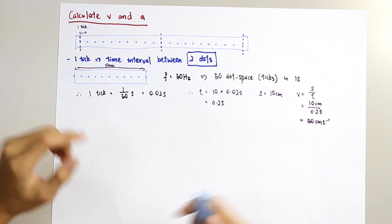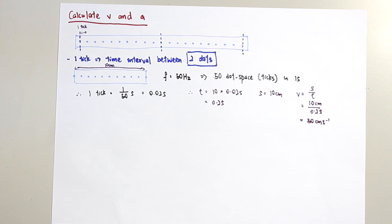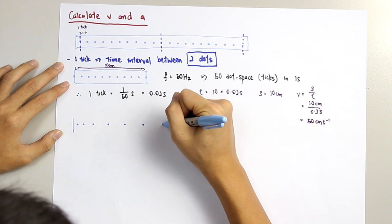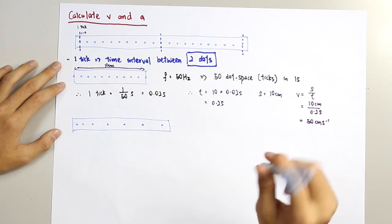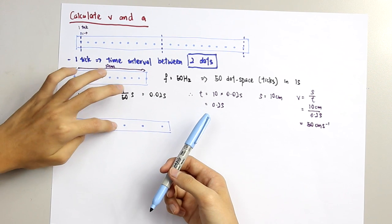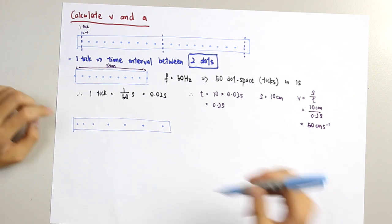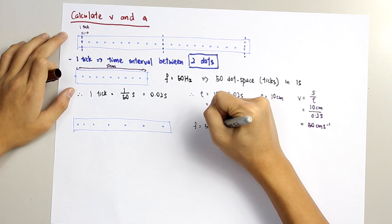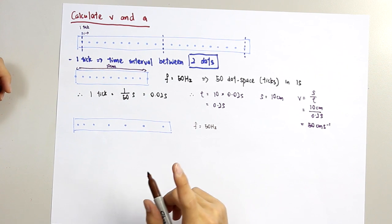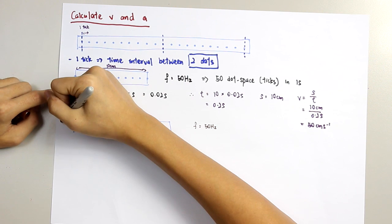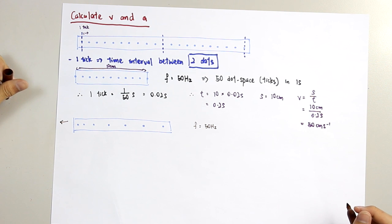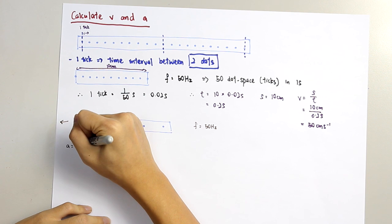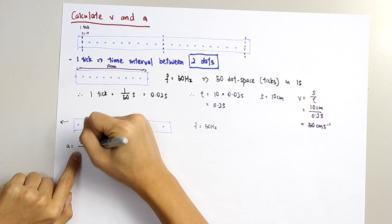To calculate acceleration, we are given a strip with a certain number of dots. I will assume this strip has 6 ticks and 7 dots, with a frequency of 50 hertz and non-zero acceleration. You need to know the direction of motion — I assume the ticker tape is moving in this direction. To calculate acceleration, we use the formula: final velocity minus initial velocity, divided by time taken.